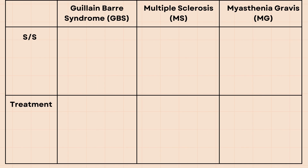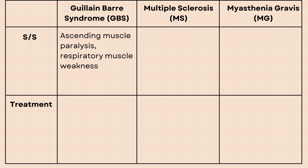The characteristic symptom of GBS is ascending muscle paralysis, in which the paralysis starts in the toes or fingers and moves upwards. It can eventually involve the respiratory muscles and lead to respiratory failure.